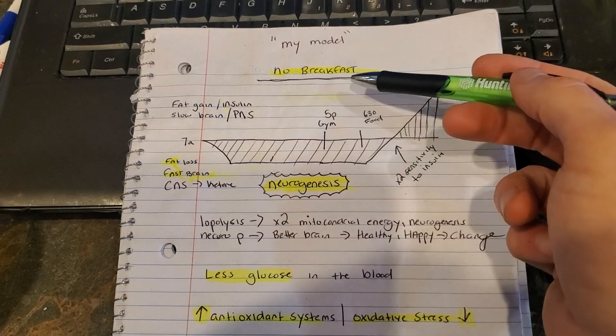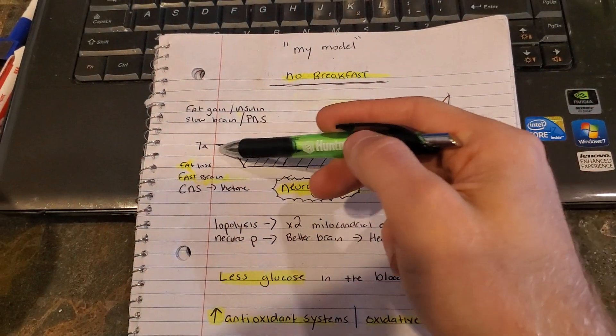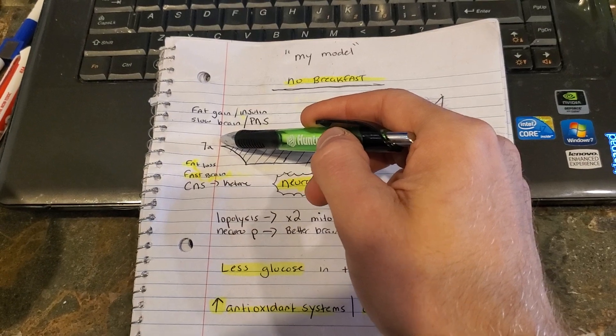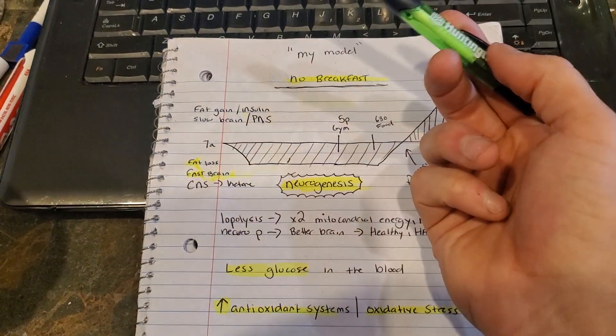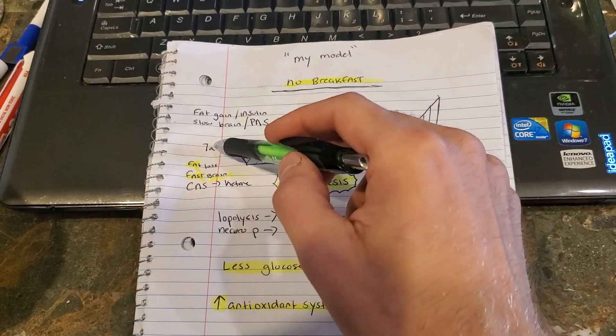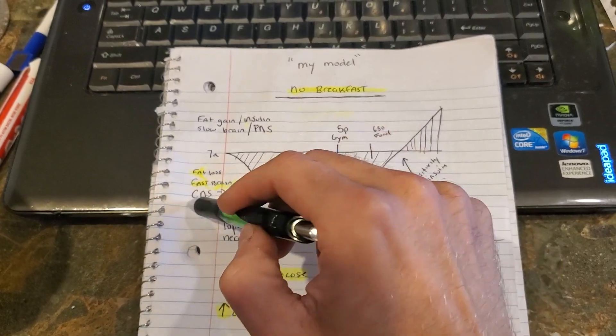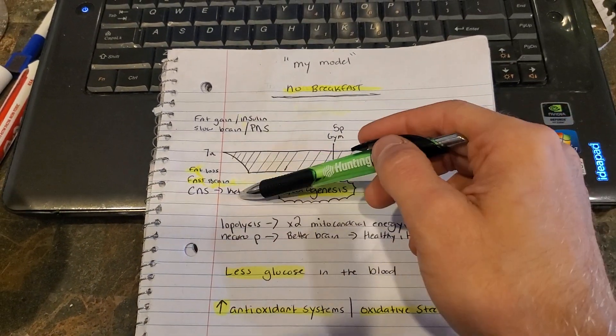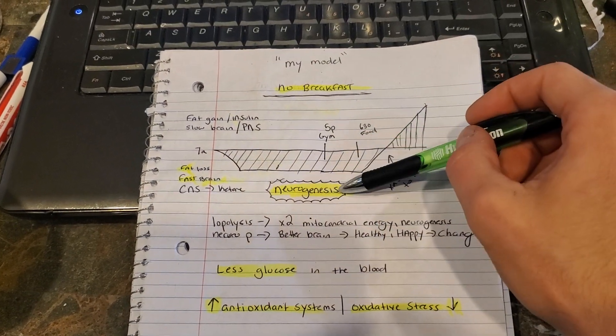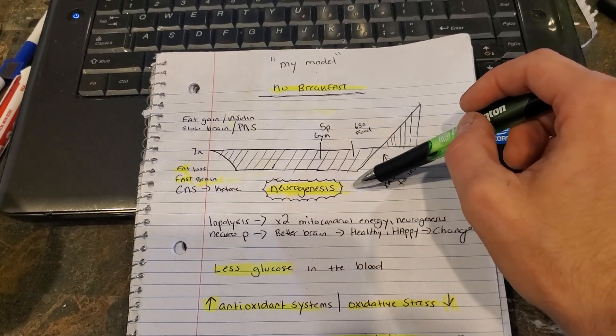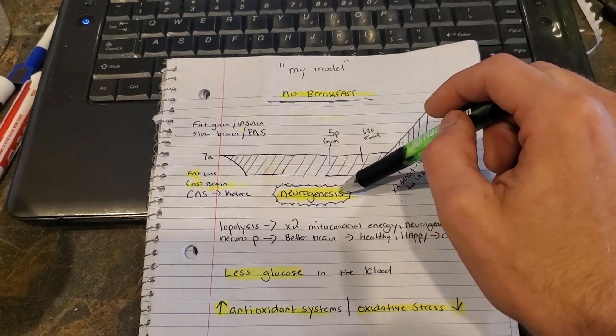So this is no breakfast model, the one that I follow. So right here is called wake up, don't eat, let your glycogen deplete. Your liver stores will deplete, and then you'll go into lipolysis. You'll start burning fat, fat loss, fast brain, your central nervous system is going to stay engaged, the blood is going to stay in your head. And this is one of the things that promote neurogenesis, which is the birth of new brain cells in your hippocampus at your memory and learning centers.